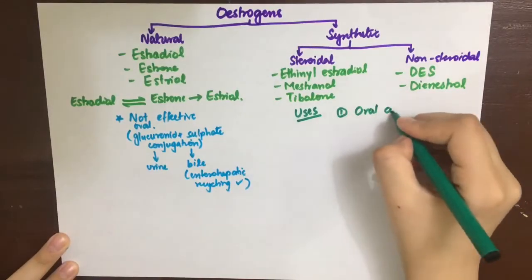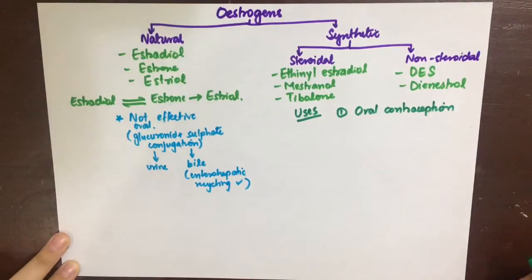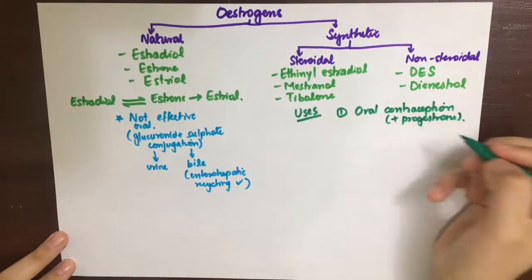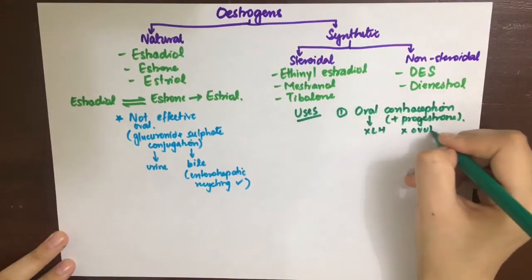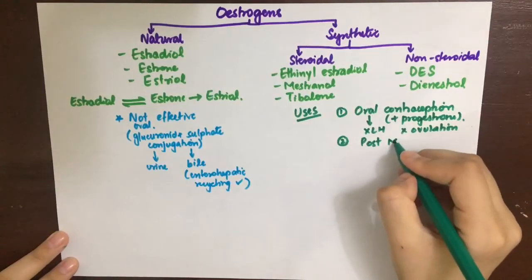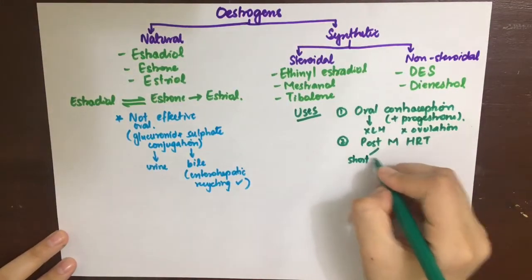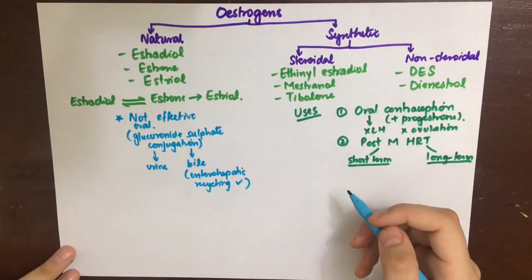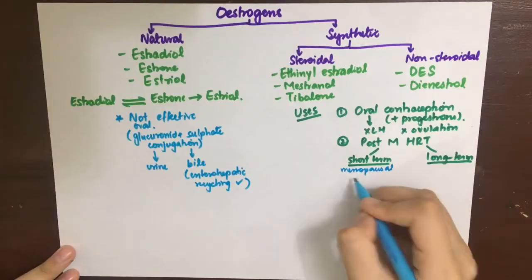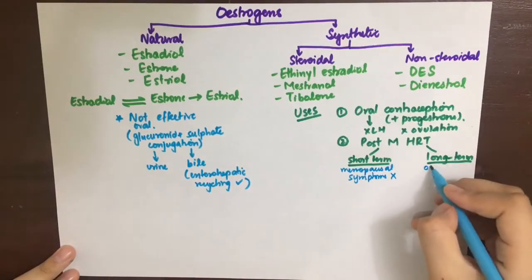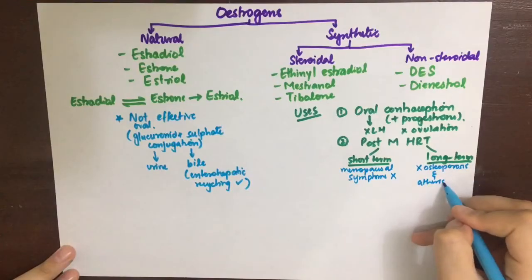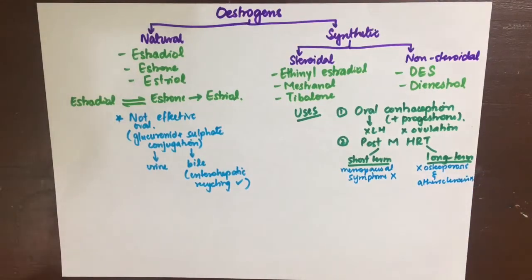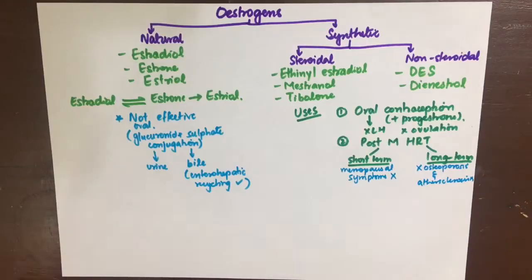The synthetic estrogens have a wide variety of uses. Firstly, they can be used in oral contraception when combined with progestins — they negatively inhibit LH and FSH secretion and thus inhibit ovulation. Secondly, they can be used in postmenopausal women as hormone replacement therapy. Short-term therapy aims to relieve menopausal symptoms such as hot flushes, night sweats, depression, insomnia, and irritability, while long-term use is to prevent osteoporosis, atherosclerosis, coronary artery disease, and Alzheimer's.